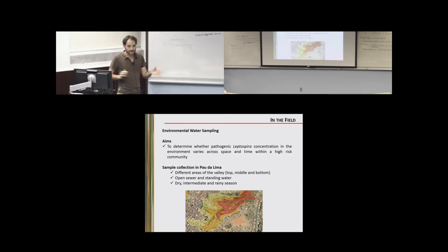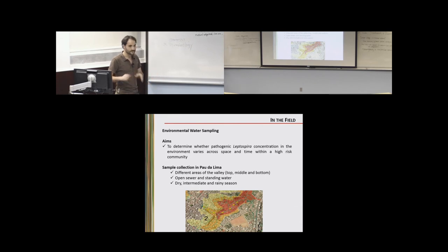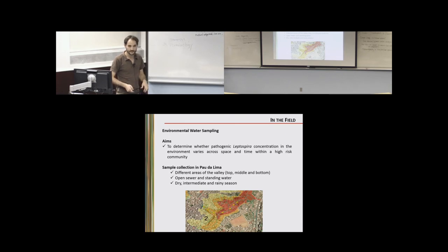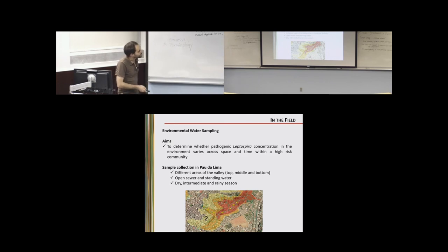In the field, we are doing experiments in one of the valleys of Pau de Lima to determine the concentration of Leptospira in the environment and how it varies across time in this high-risk community. We are sampling different areas of the valley — top, middle, and bottom — as well as open sewers and standing water, to see if these two compartments have different Leptospira abundance. We are studying three different seasons: dry, intermediate, and rainy, hypothesizing that the rainy season will show higher Leptospira concentrations circulating in the water.